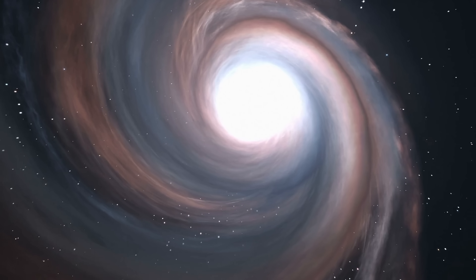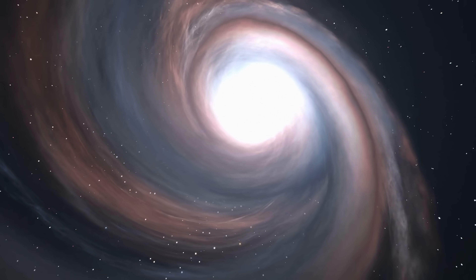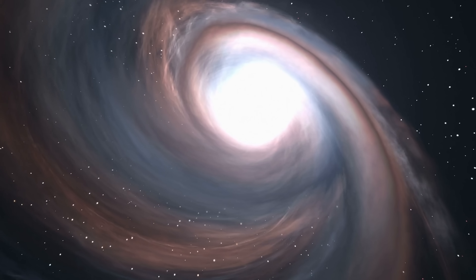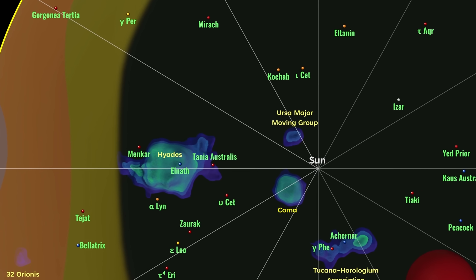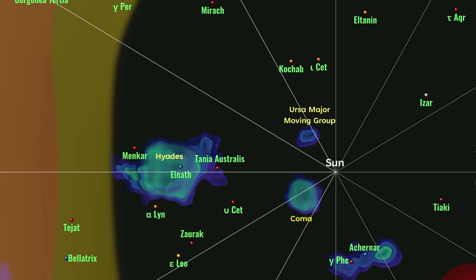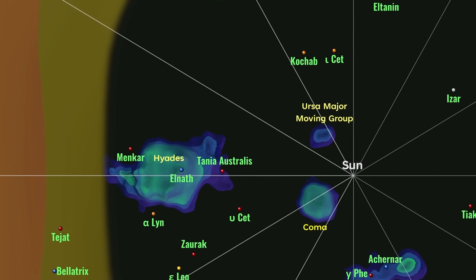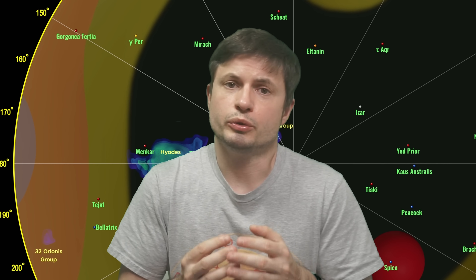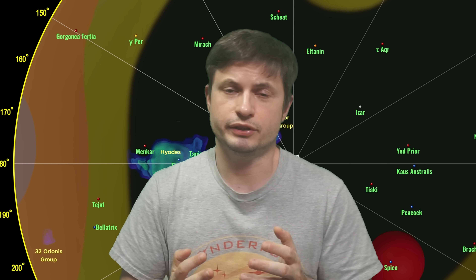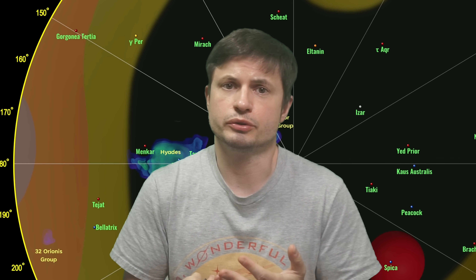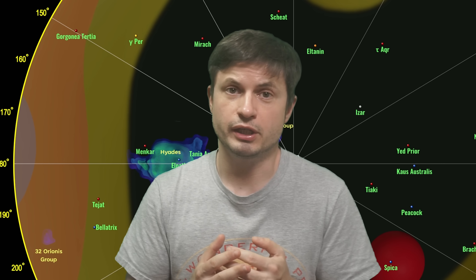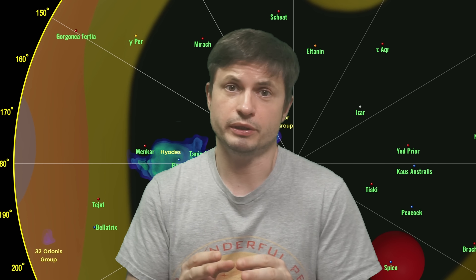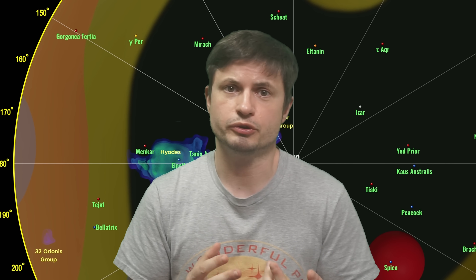A few years later, Andrew Skumanich was able to discover a really interesting relationship between stars' rotation and their age. By looking at the very famous Hyades open cluster — the cluster shown on this map created by Kevin Jardine from galaxymap.org — he was essentially able to uncover that the average rotation velocity of all stars in the cluster was inversely proportional to the square root of the cluster's age. Or, just to rephrase this, there was a direct relationship between the age of the cluster and how fast the stars were spinning.